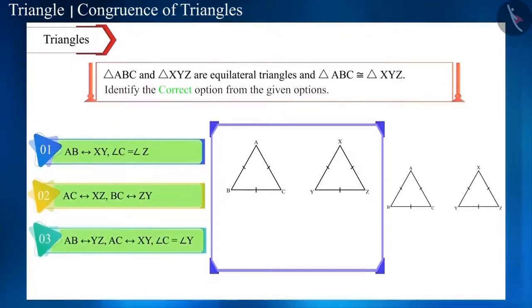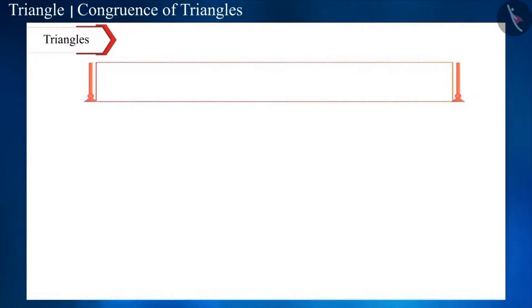And in such circumstances, we can also write the congruence of triangles as follows. Triangle ACB is congruent to triangle XYZ, triangle CAB is congruent to triangle ZXY and triangle BAC is congruent to triangle YXZ. Let's look at one more question.